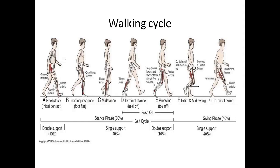The walking cycle phases A through G are illustrated. Heel strike is the initial contact phase. Then comes the loading response — you can identify muscles such as quadriceps and others. Then the mid-stance phase, involving triceps surae. Then the terminal stance.